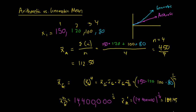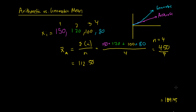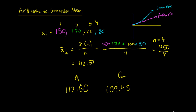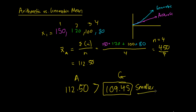So what you can see is that we have this geometric mean of 109.45 and the arithmetic mean of 112.50. The arithmetic mean is larger than the geometric mean. Because of the nature of a geometric sequence — it gets bigger over time — the geometric mean is always going to be smaller than the arithmetic mean. So if you're ever asked to work out both and your geometric mean comes out larger, you've made a calculation error. It always has to be smaller than your arithmetic mean, just by nature.